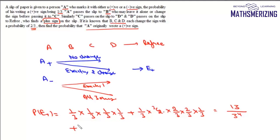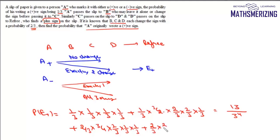For the second case when A starts with a negative sign, the probability is 2/3. For exactly one of B, C, D changing the sign: (2/3) × C(3,1) × (2/3) × (1/3) × (1/3). For all three changing the sign: (2/3) × (2/3) × (2/3) × (2/3). Combining over 3⁴, this gives 12 and 16, totalling 28 upon 3 to the power 4.